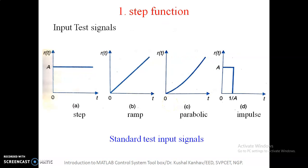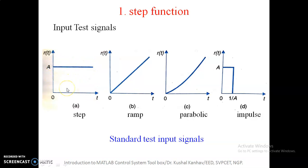Our first function to discuss is the STEP function. The STEP function is related to the input signal of the control system. There are various input signals available for any system. The first is a step input with an amplitude equal to A. R(T) is the representation of the input signal plotted with respect to time T. At T equals 0, the amplitude is A, and at T tending to infinity, it remains A. This is what is called the step input.